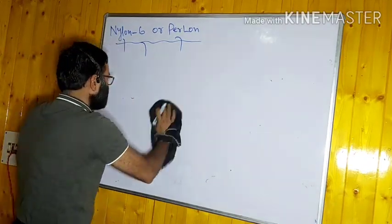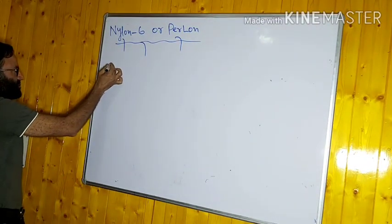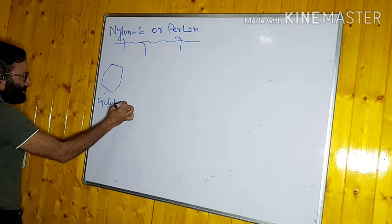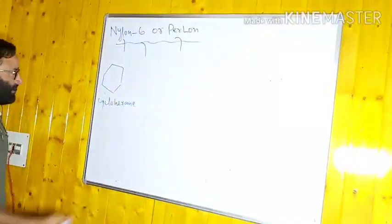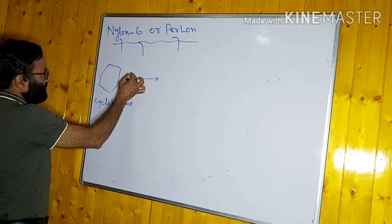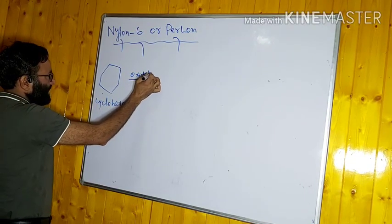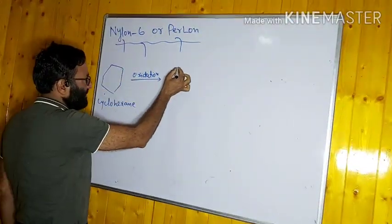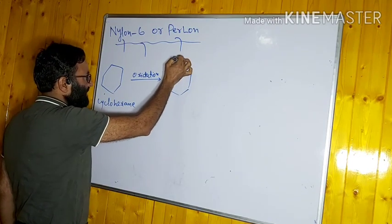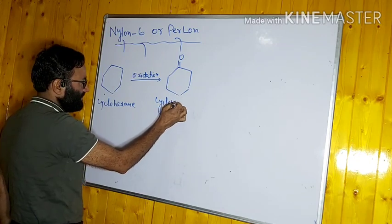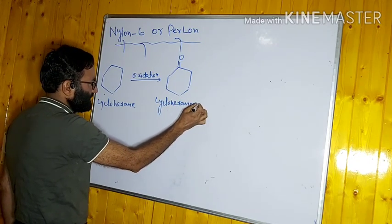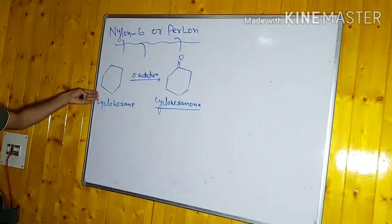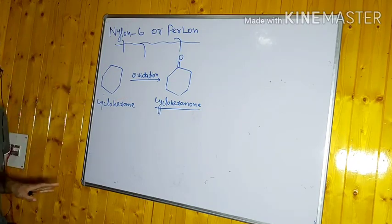To obtain caprolactam, you start with cyclohexane. Upon oxidation of cyclohexane, an oxygen from the oxidizing agent forms a bond with the cyclohexane ring, converting it into cyclohexanone. Cyclohexanone is a ketone. So the starting material is cyclohexane, and upon oxidation you get cyclohexanone.